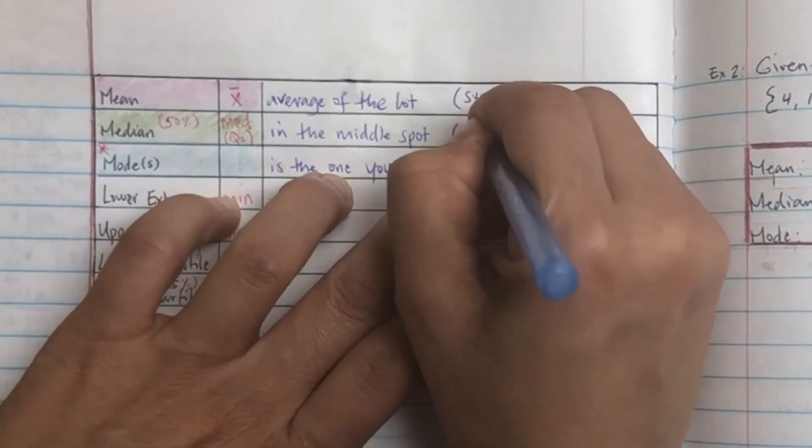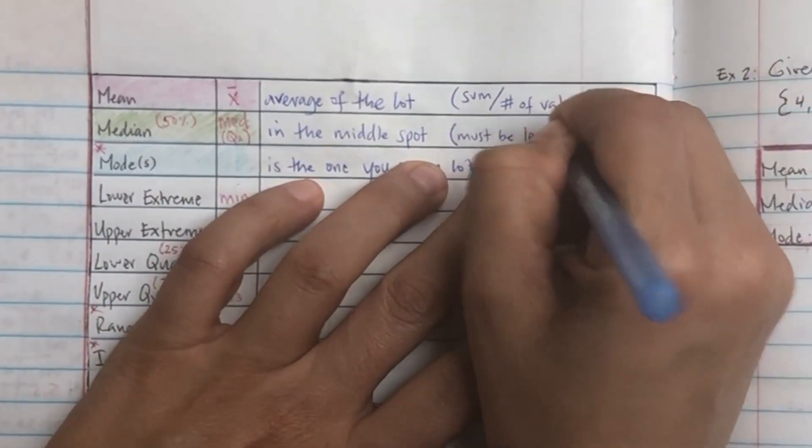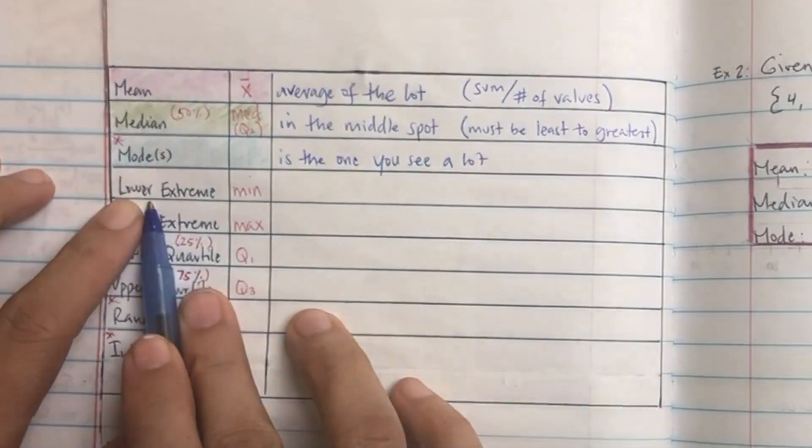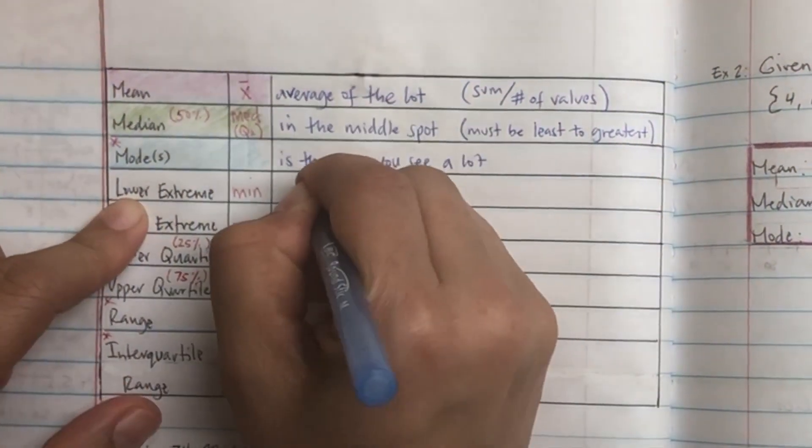Mean, x-bar, average of the lot, and how you find that is the sum divided by the number of values. The one in the middle spot, you have to order them from least to greatest, and mode is just the one you see a lot.